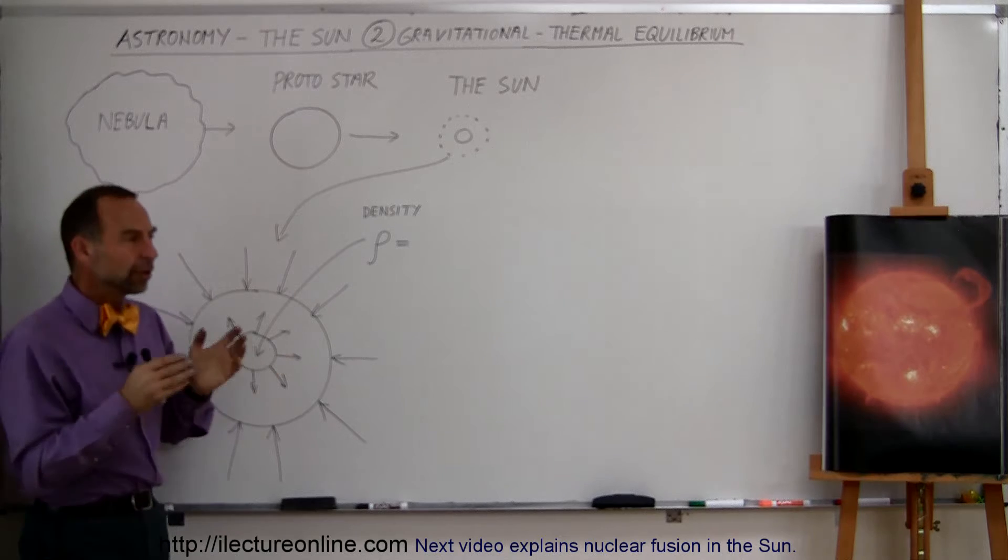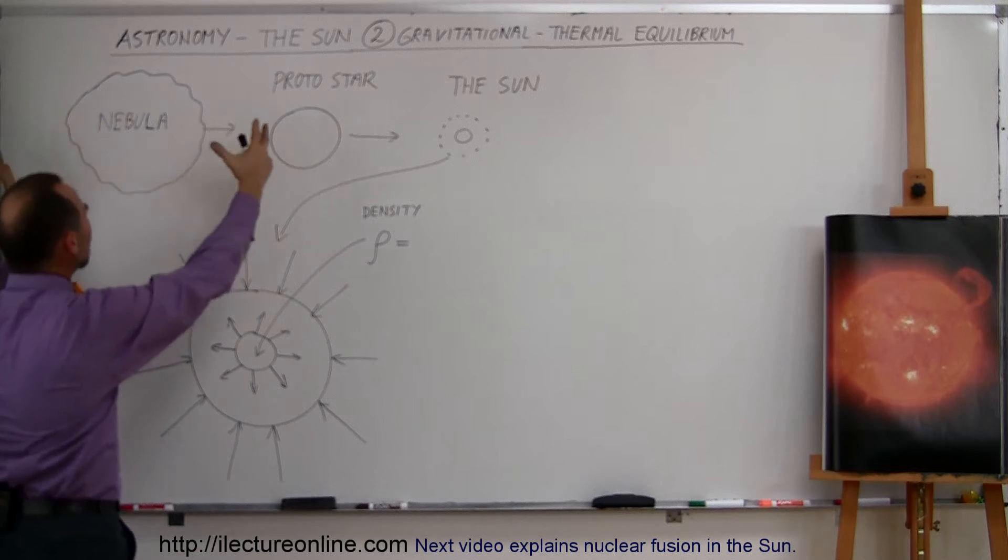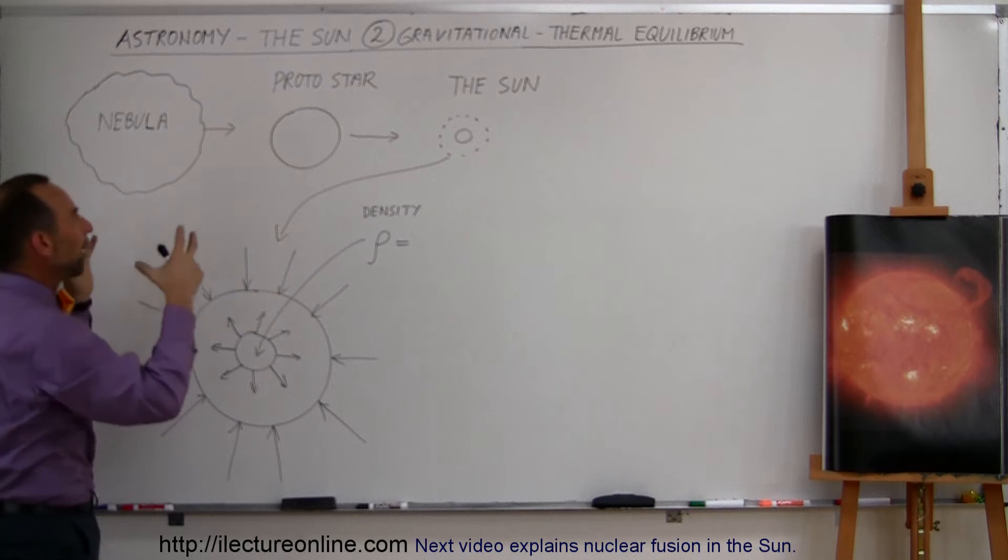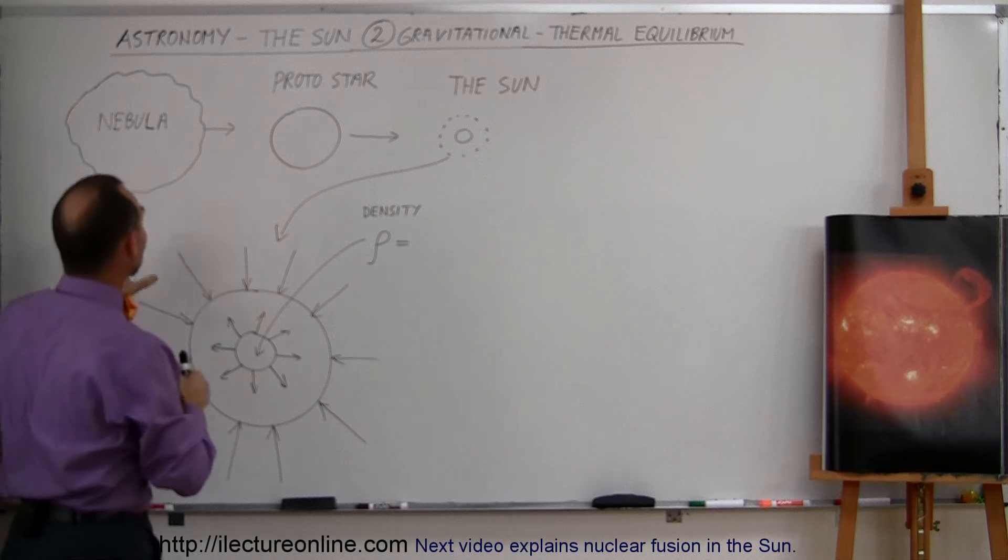So where did the Sun come from? Well, the Sun collapsed from a nebula. So it was a nebula that, for some reason, collapsed in on itself due to gravitational forces and some other forces involved to make the gravitational collapse start.